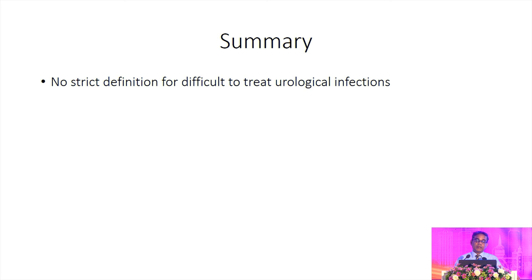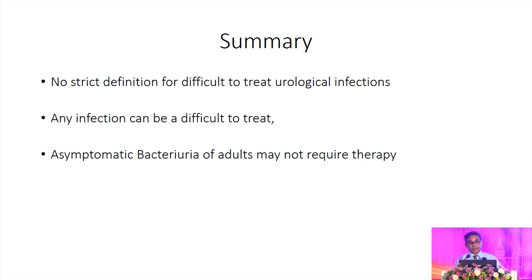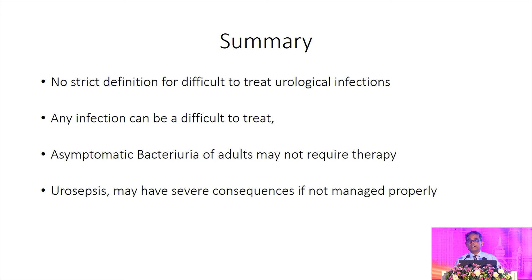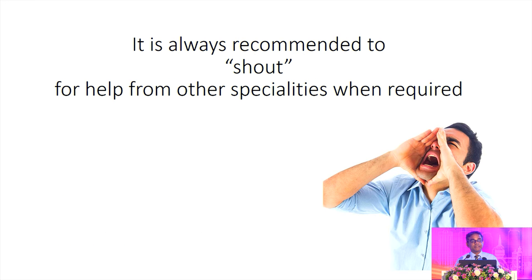Difficult-to-treat urological infection is very difficult to define because it depends on your management. Asymptomatic bacteriuria in adults does not need treatment. Urosepsis requires timely antimicrobial treatment and source management. Culture still holds a mainstay when managing difficult urological infections. If you find it difficult to manage, please ask for help — we are here to help you, and we can have multidisciplinary involvement so that infections will no longer be difficult to manage. Thank you very much.